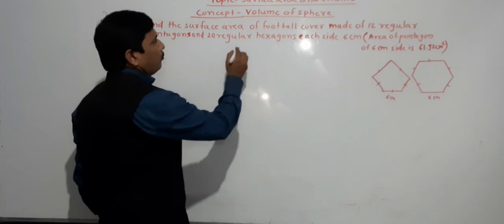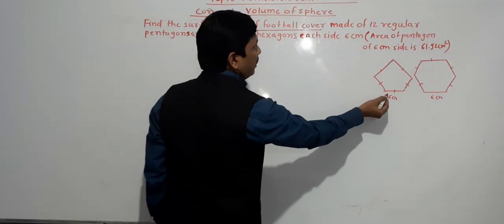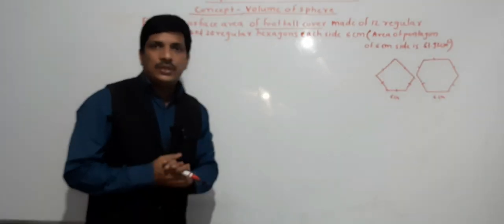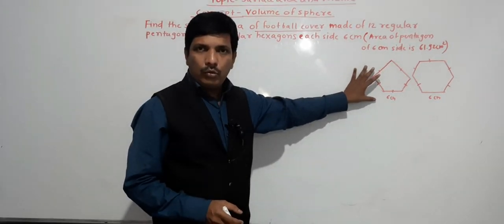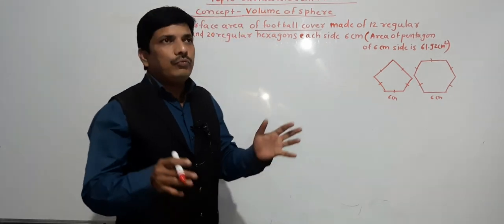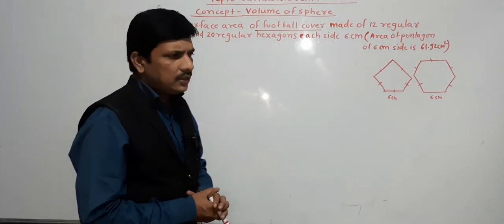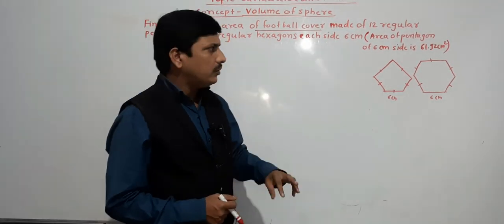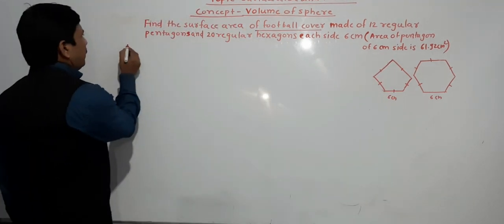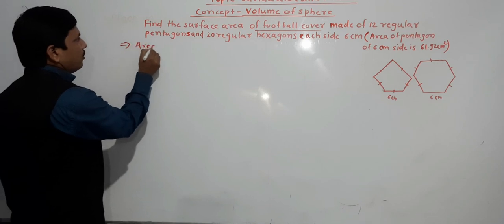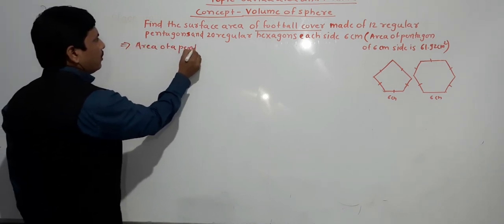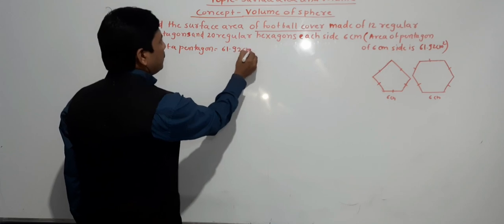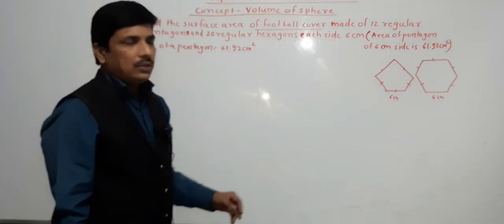The total area of the football cover is made up of 12 regular pentagons and 20 regular hexagons. So we need to find the curved surface area of 12 regular pentagons and curved surface area of 20 regular hexagons, then sum them to get the total surface area. Area of one pentagon is given as 61.92 cm square.